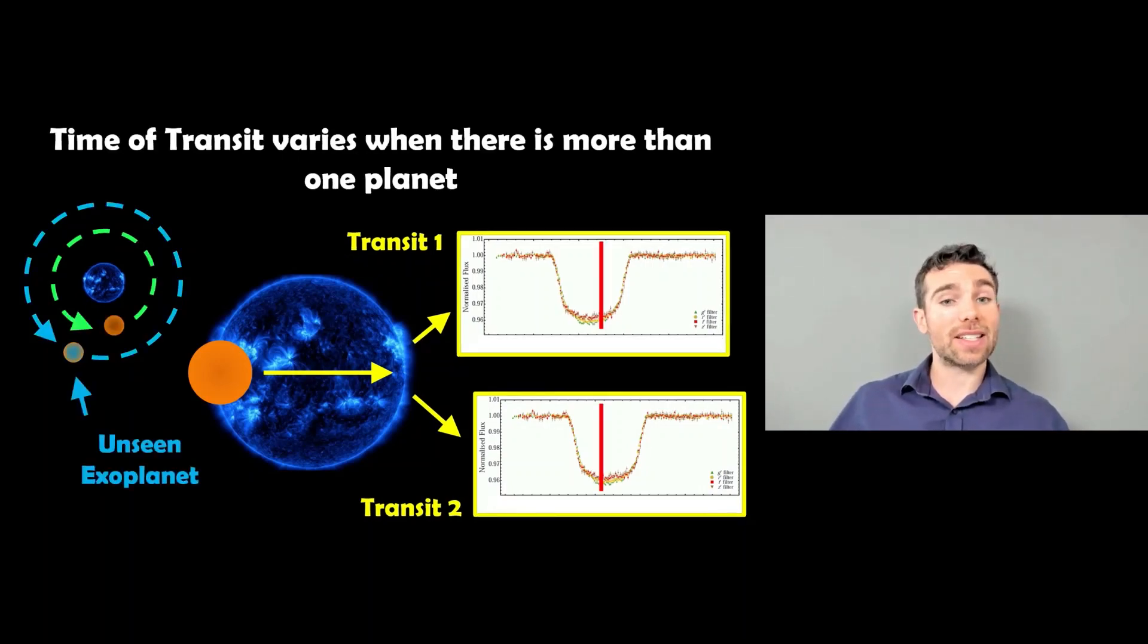Now if you have a second planet or more planets in the system, then your transits are actually going to change when they occur. Sometimes it could be early, sometimes they could be late, and that's because the planets are interacting in the system and they can actually change their orbital velocities ever so slightly.